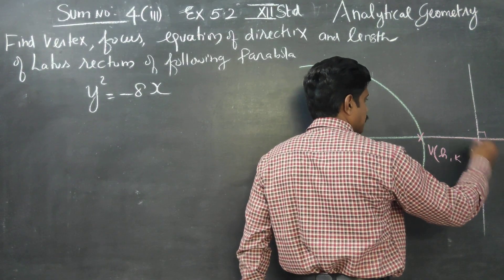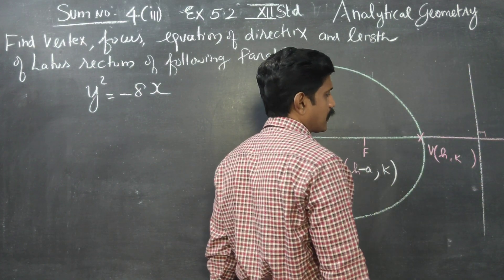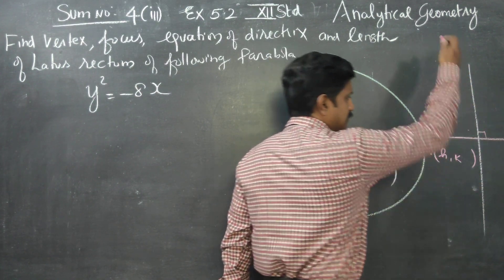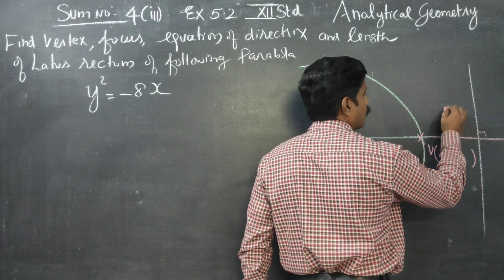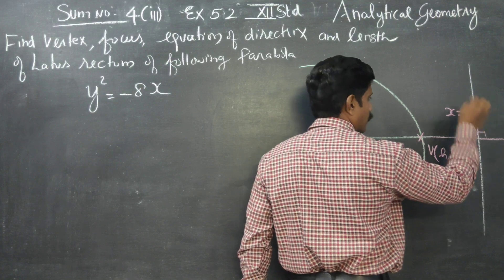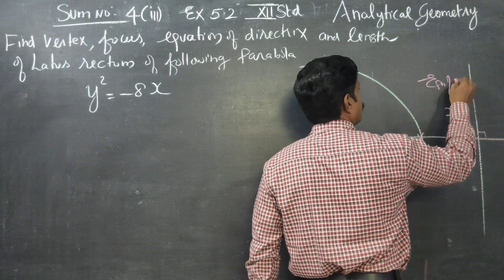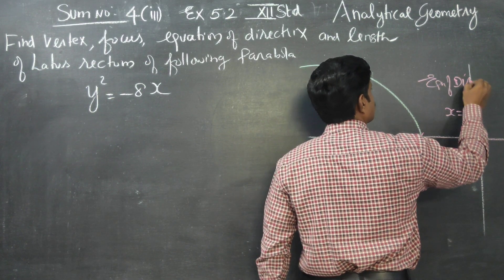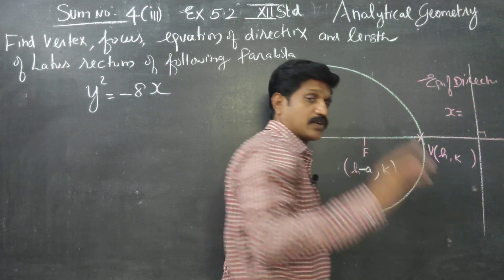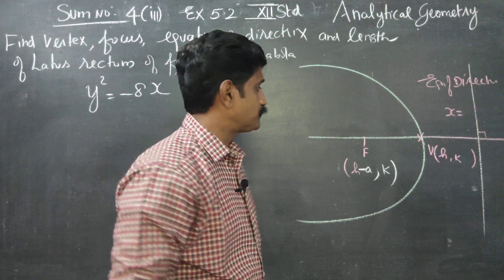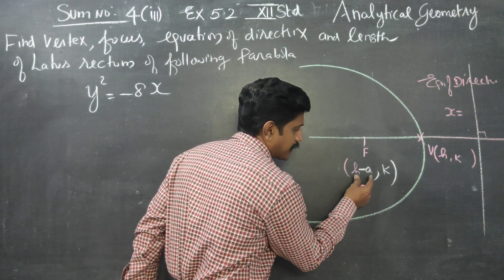The directrix is perpendicular to the symmetry line, which is the X axis. Therefore, the equation of the directrix is x equals H plus A — the other X coordinate on the opposite side.